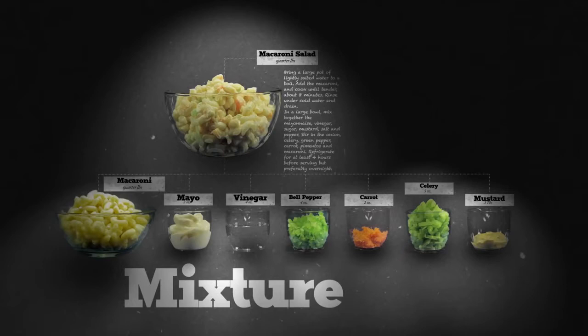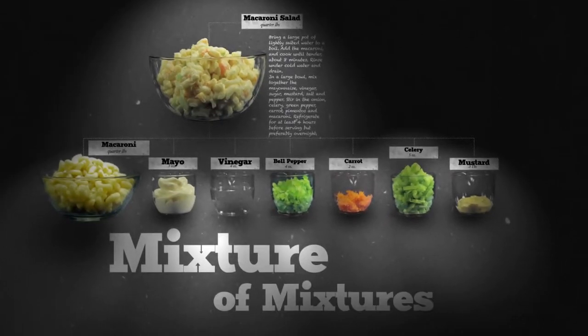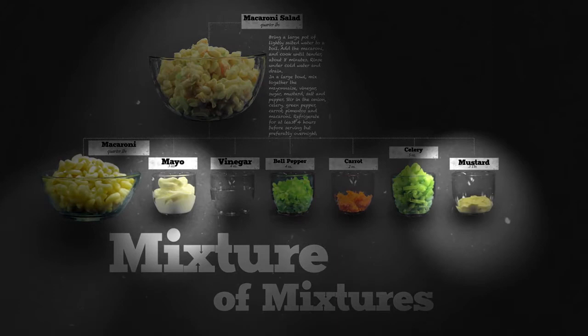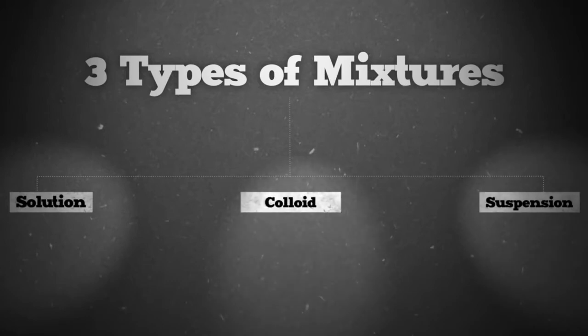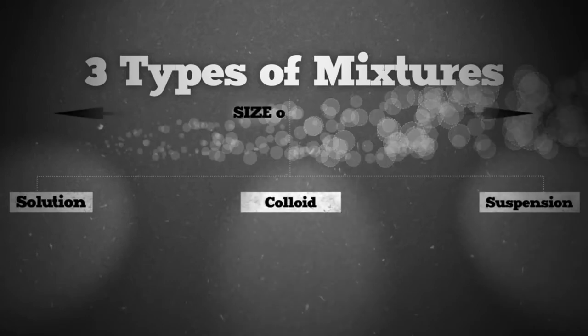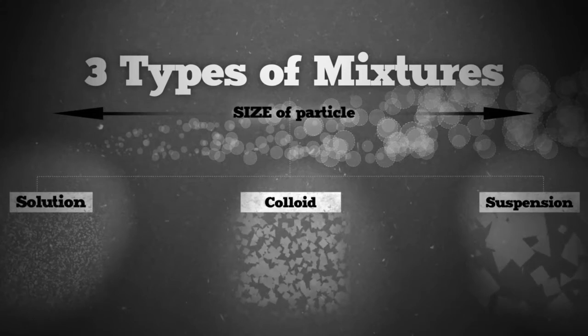It turns out that macaroni salad is actually a mixture of mixtures because many of the ingredients, like mayo and mustard, are already mixtures themselves, which is nice for us because if we look closely, we'll see the three main types of mixtures that exist. The size of the particles in a mixture determines the type of mixture.